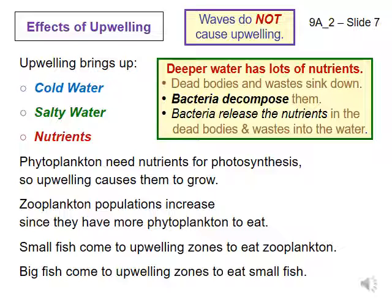Upwelling zones can occur in the middle of the ocean, far from land, and support lots of living things. Upwelling benefits phytoplankton in other ways: the upward moving water pushes the phytoplankton up towards the sun. In addition, the upwelled water is both cold and salty, and therefore has a high density. High density water provides more support and pushes phytoplankton upwards, helping them get more sunlight for photosynthesis. Deeper water tends to have more nutrients than surface water, because there are no phytoplankton down deep absorbing them, and new nutrients are added by bacteria decomposing dead, decaying matter and wastes sinking down from the surface.